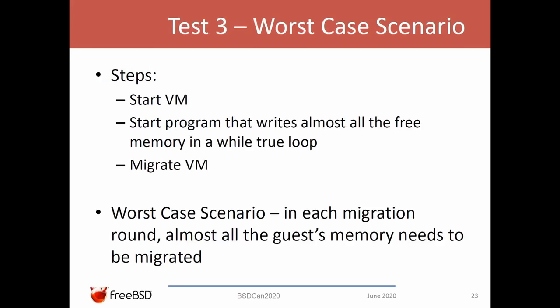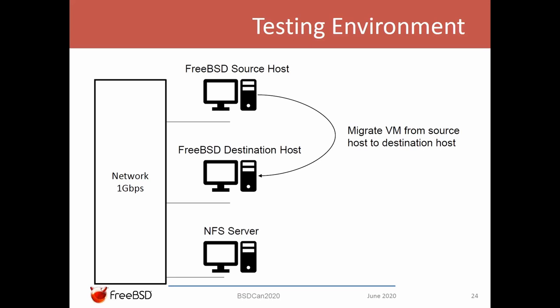The third test case runs a memory stress test. We allocate as much memory as we can and modify it in a while-loop. This means that in each migration round, almost all the guest memory should be migrated. We had the following environment: a one gigabit per second network and three hosts — two used as source and destination, and the third as an NFS server for sharing the guest disk image.